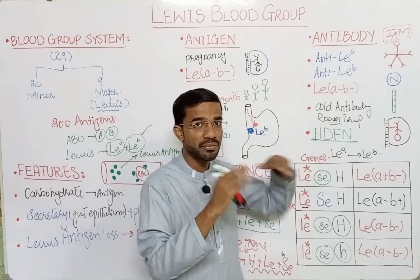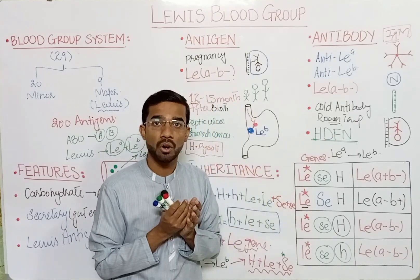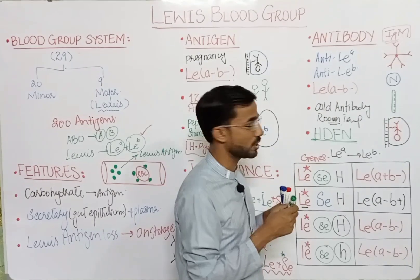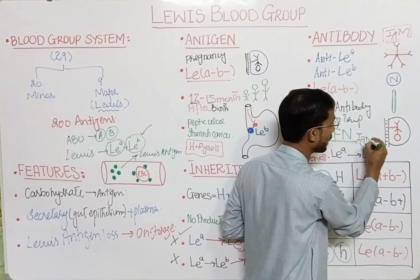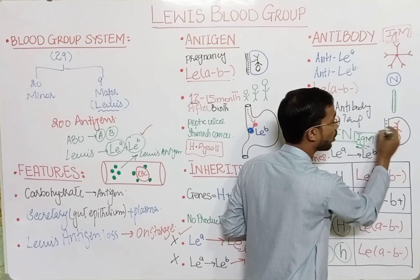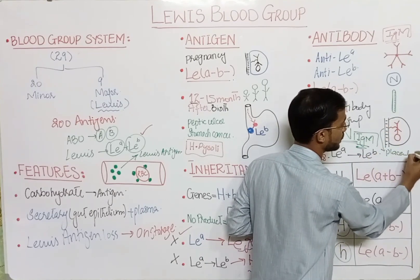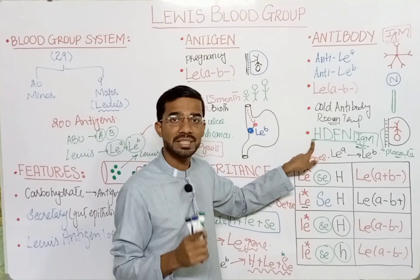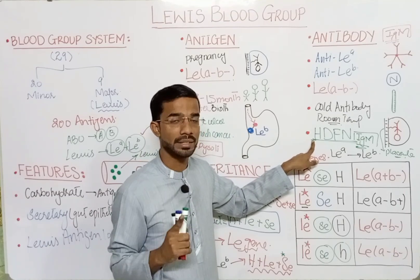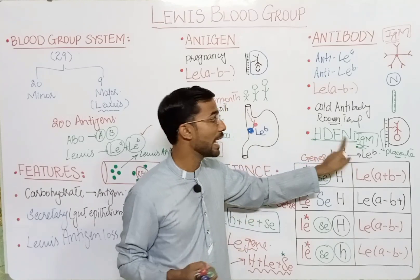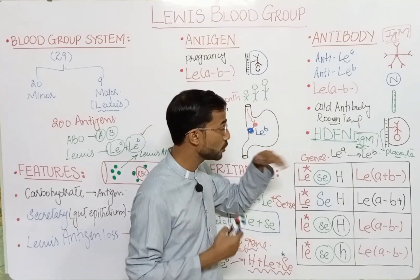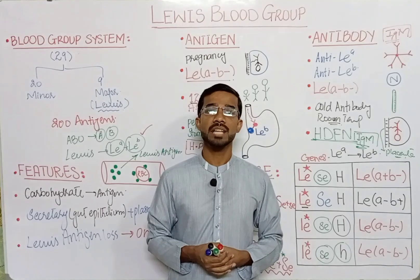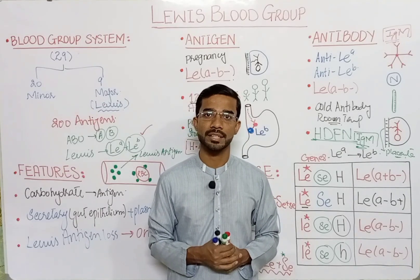There is no HDFN because, first, Lewis blood group antigen is not expressed in the early stages in the fetus. Second, the antibody is IgM in nature, and IgM antibodies cannot cross the placenta. Due to these two points, you will never see hemolytic disease of the fetus and newborn. This is all about the Lewis blood group system.